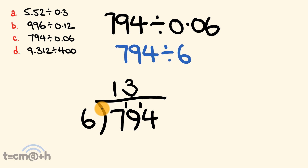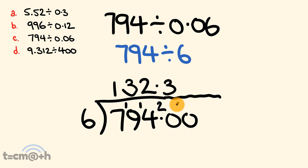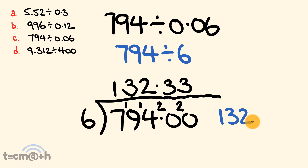How many times does 6 go into 14? 6 goes into 14 twice because 6 times 2 is 12, and there are 2 left over. We continue the line and put zeros there to carry on, putting a decimal point up. How many times does 6 go into 20? 6 goes into 20 three times — 3 times 6 is 18 — with 2 left over. This continues: 3, 3, 3 on to infinity. So we have this interim answer of 132.33.